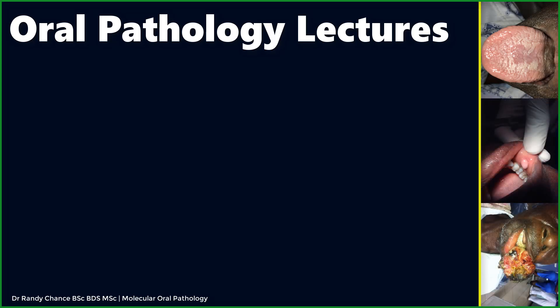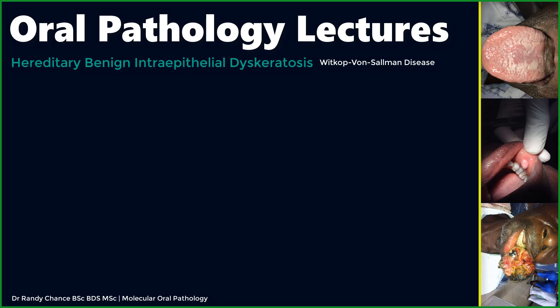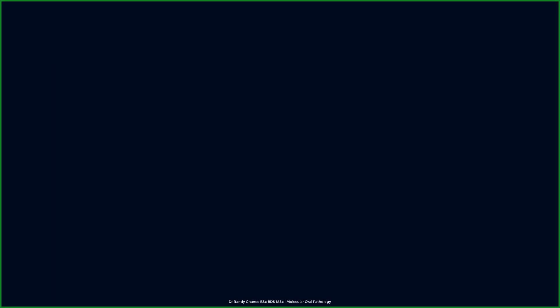Our next topic for discussion in the white lesion series is hereditary benign intraepithelial keratosis, or Witkop's disease. Just like white sponge nevus, this disorder is also a genodermatotic pathology or genetic mucosal keratinopathy, presenting with lesions in the mouth and, in this case in particular, frequent ocular lesions as well. Ocular involvement is the main clinical distinguishing factor between hereditary benign intraepithelial keratosis and white sponge nevus.